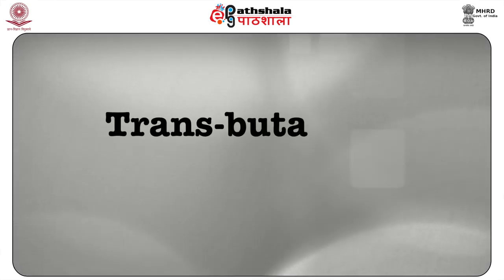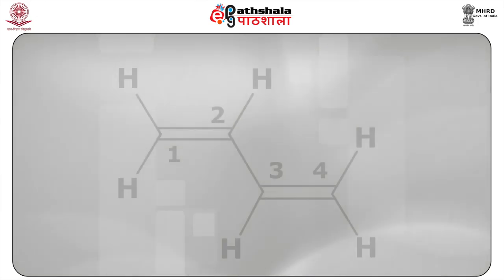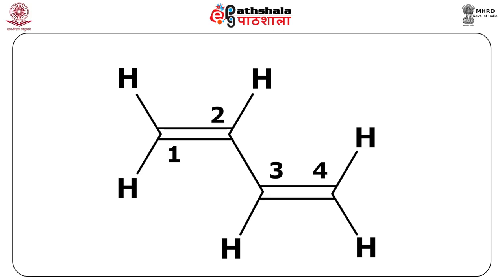We will first consider the trans isomer and find out the selection rules. We put the 2pz orbitals that house the electrons forming part of the π framework. Because it belongs to C2H symmetry, there is a centre of symmetry, a plane, and a C2 axis. The C2 axis is the z axis, the y axis defines the plane, and the 2px orbital is perpendicular to that. The molecule is in the xy plane and the π electrons are in the 2pz orbitals.